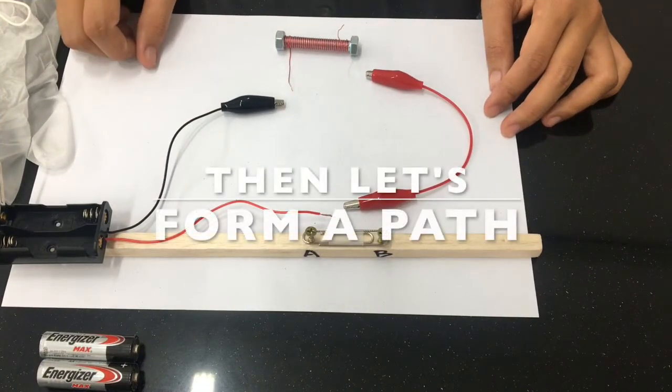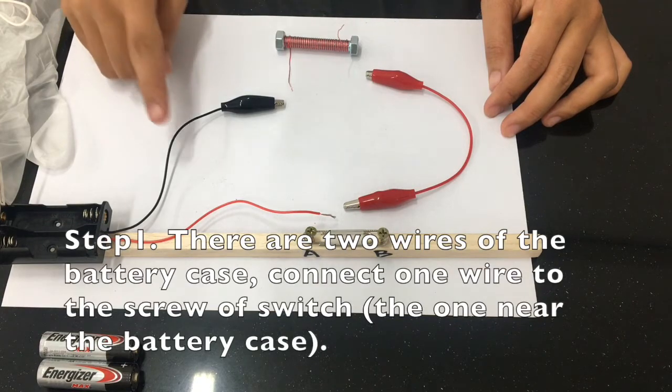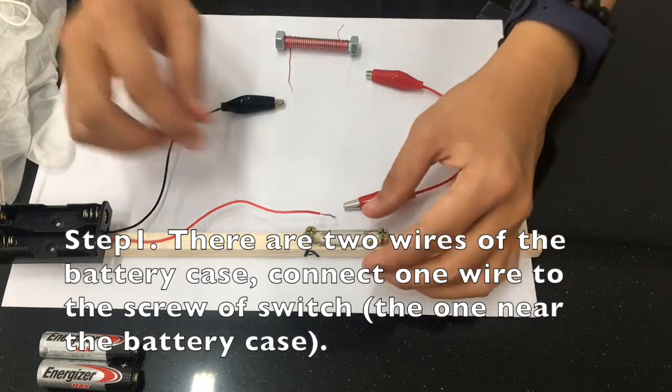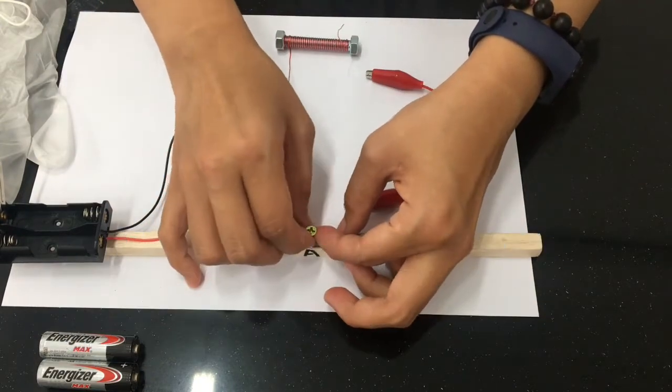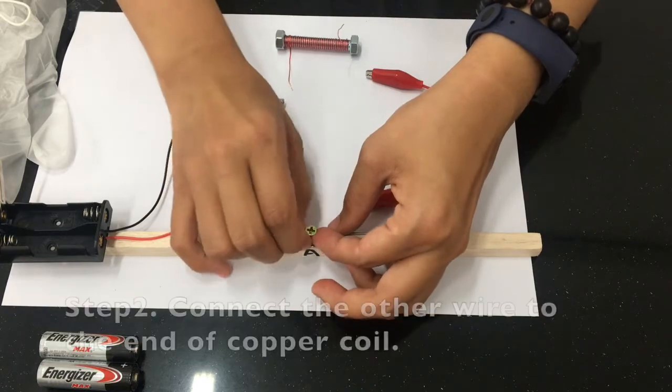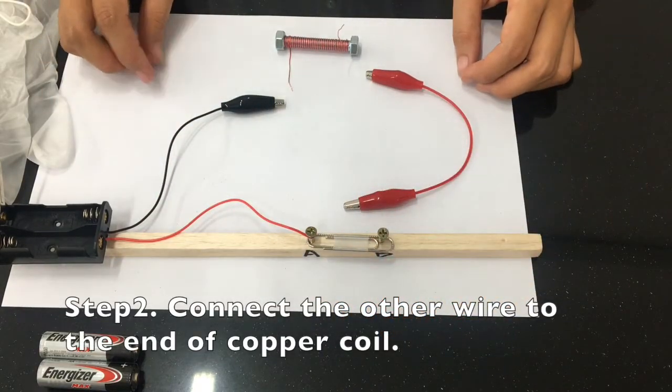Then let's form a path. Step 1: There are two wires of the battery case. Connect one wire to the screw of the switch, the one near the battery case. Step 2: Connect the other wire to the end of the copper coil.